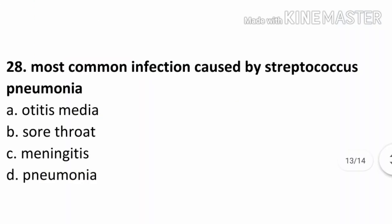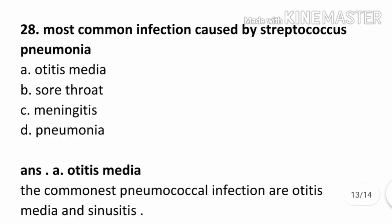Question number 28. Most common infection caused by Streptococcus pneumoniae: Option A. Otitis media, Option B. Sore throat, Option C. Meningitis, Option D. Pneumonia. The correct answer is Option A. Otitis media. The commonest pneumococcal infections are otitis media and sinusitis.